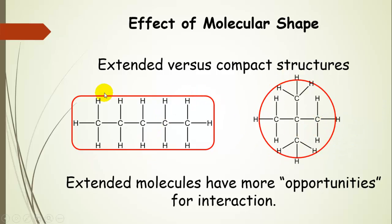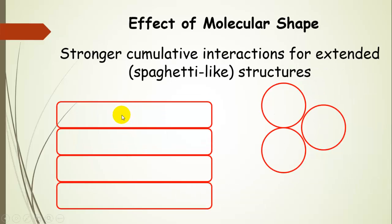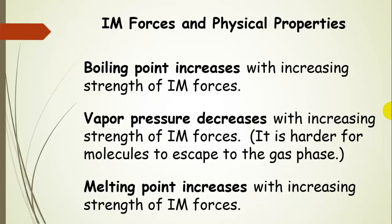Extended molecules have more opportunities to interact with neighbors. The way they do that is they can line up spaghetti-like. You can see that the more spherical structures really just have points of contact, points of interaction, but not all the way along one side like these guys do. So stronger interactions for extended structures than for compact ones.